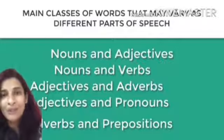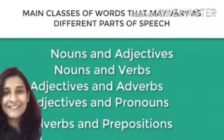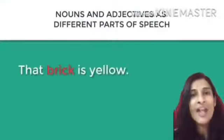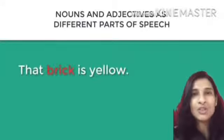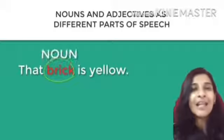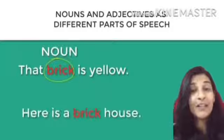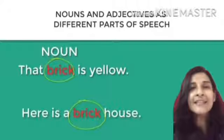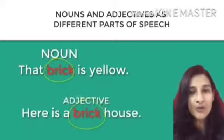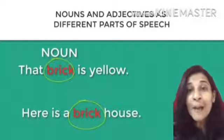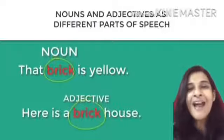Let's see examples of nouns and adjectives as different parts of speech. First: 'That brick is yellow' — here brick is a noun. Second: 'Here is a brick house' — here we are describing the house as a brick house, so brick belongs to the category of adjectives.